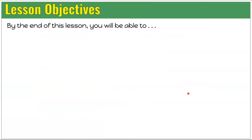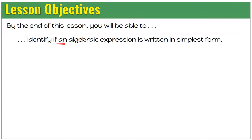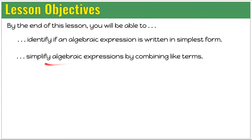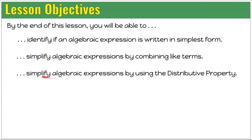Our lesson objectives today are: by the end of this lesson, you will be able to identify if an algebraic expression is written in simplest form. You will be able to simplify algebraic expressions by combining like terms, and you will simplify algebraic expressions by using the distributive property.